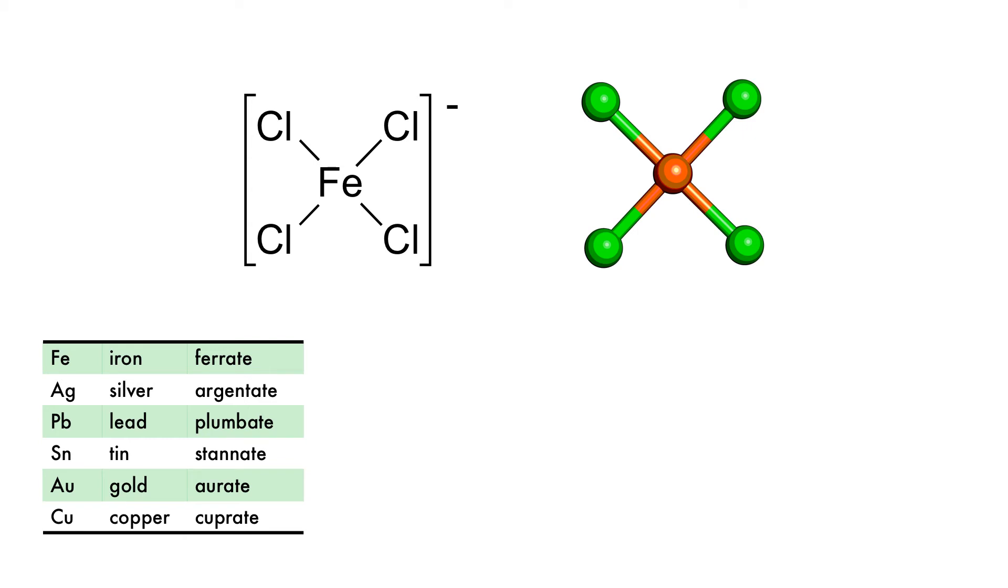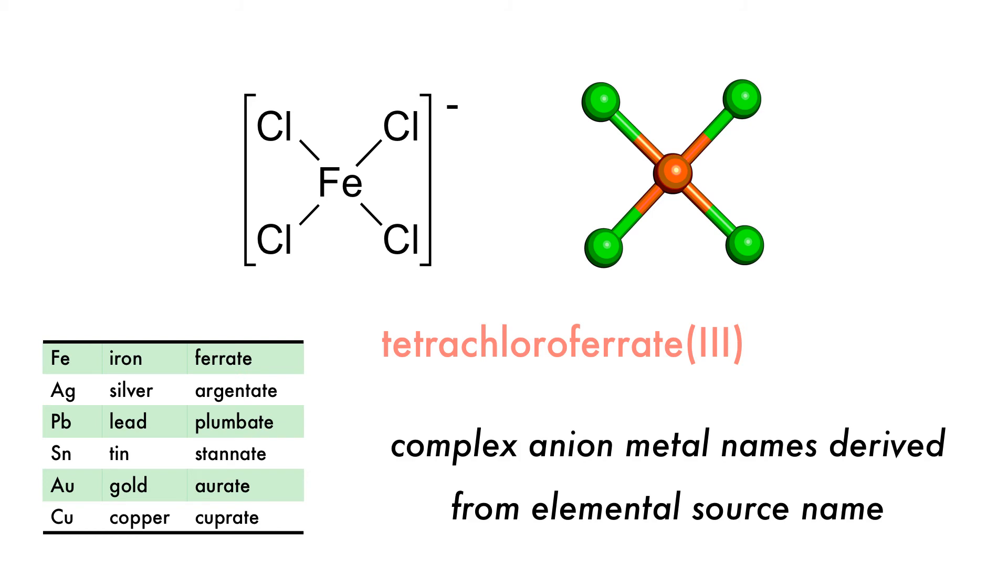For example, when we have iron in an anion, we call it ferrate. So the complex anion here is called tetrachloroferrate 3 because there are four chloro ligands on a central iron ion with an oxidation state of plus 3 for an overall charge of negative 1. The negative charge makes it an anion, and thus we need to use the element derived names.